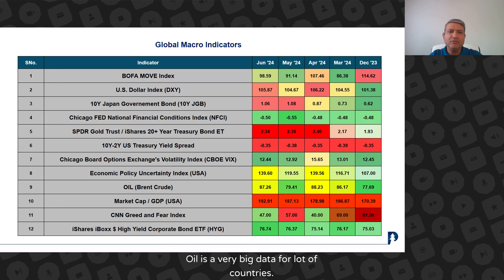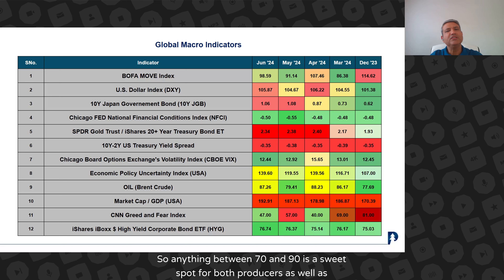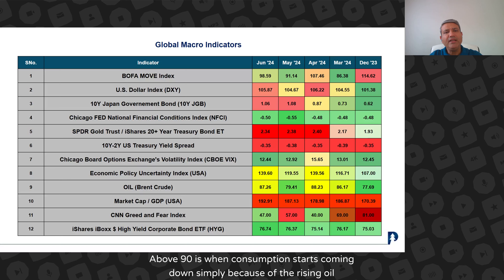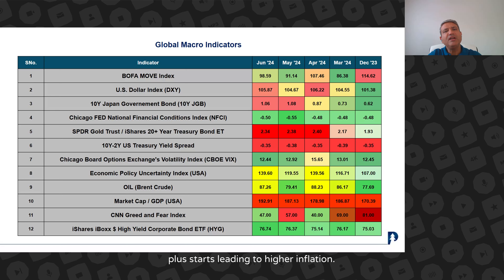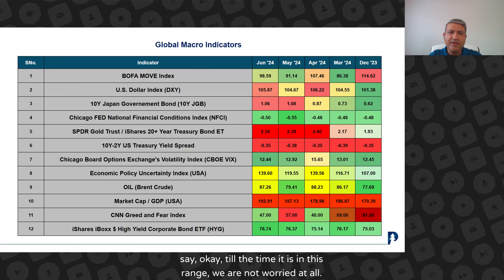Oil is a very big data point for a lot of countries. For India, 86% of all the oil which India uses is imported. Rising oil prices have actually led to the Reserve Bank of India raising rates. Anything between 70 and 90 is a sweet spot for both producers as well as consumers. Below 70, shale production becomes no more profitable. Above 90, consumption starts coming down because rising oil prices start hurting the consumer and leading to higher inflation. So between 70 and 90, we are not worried at all.